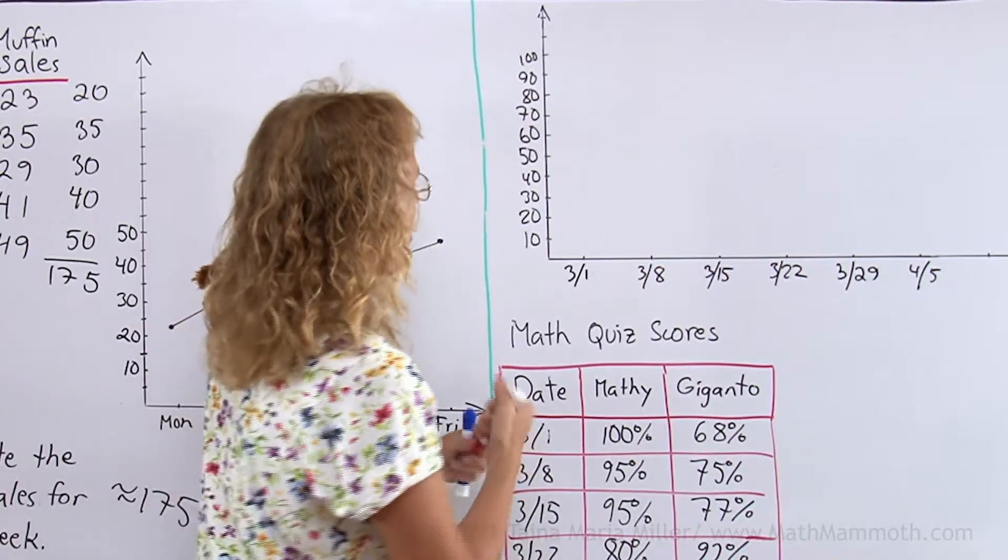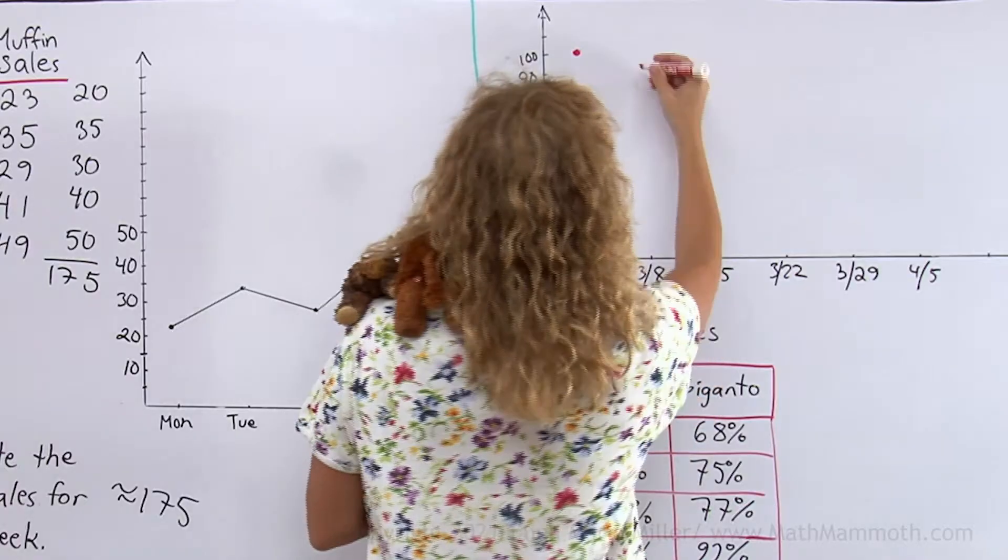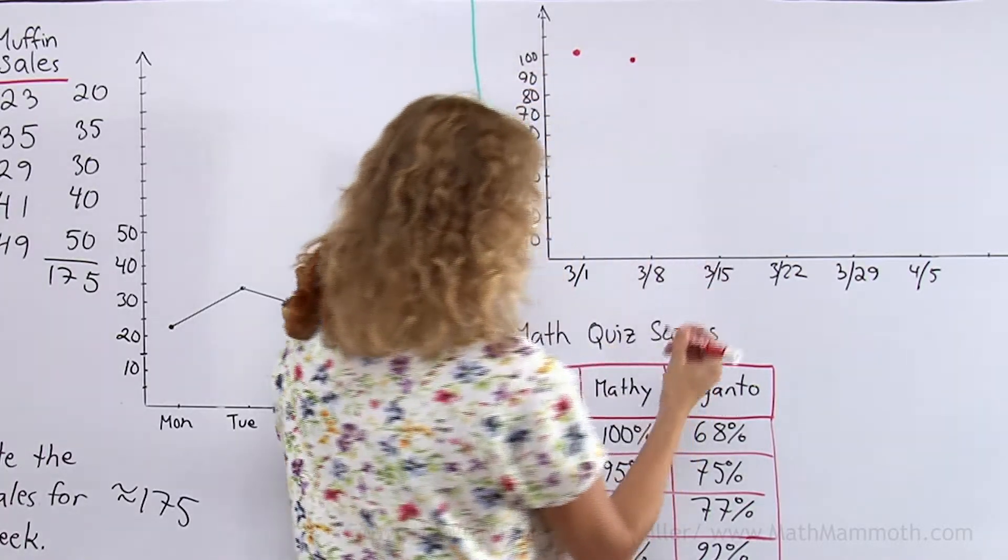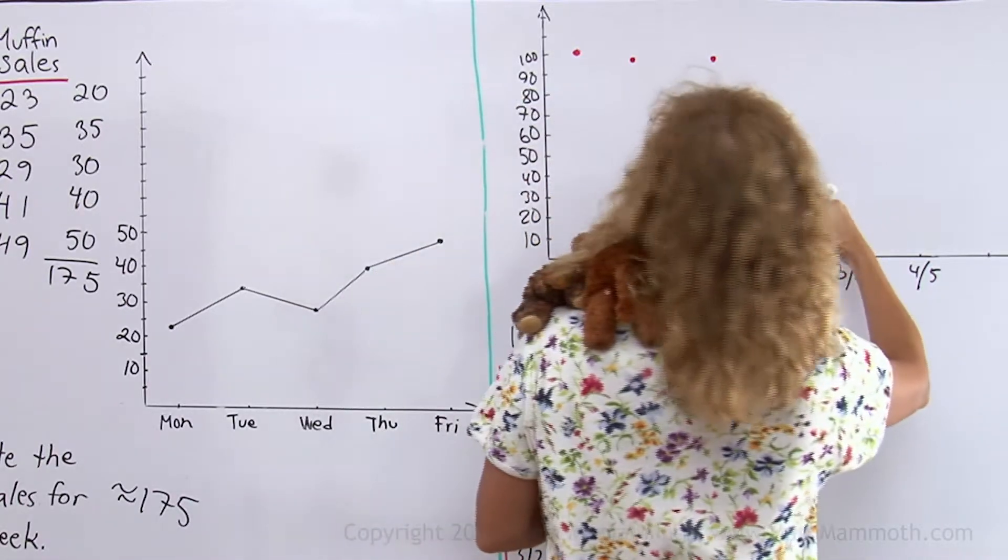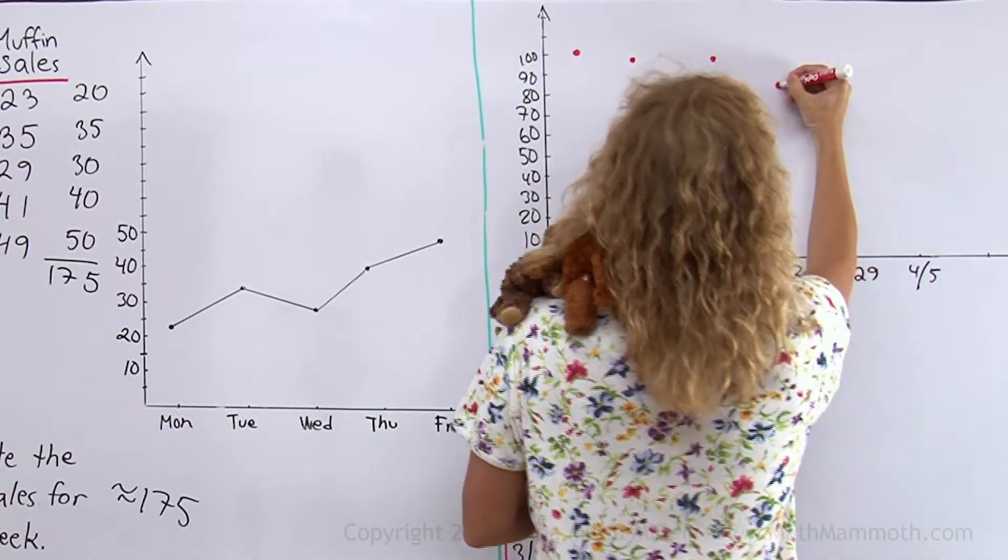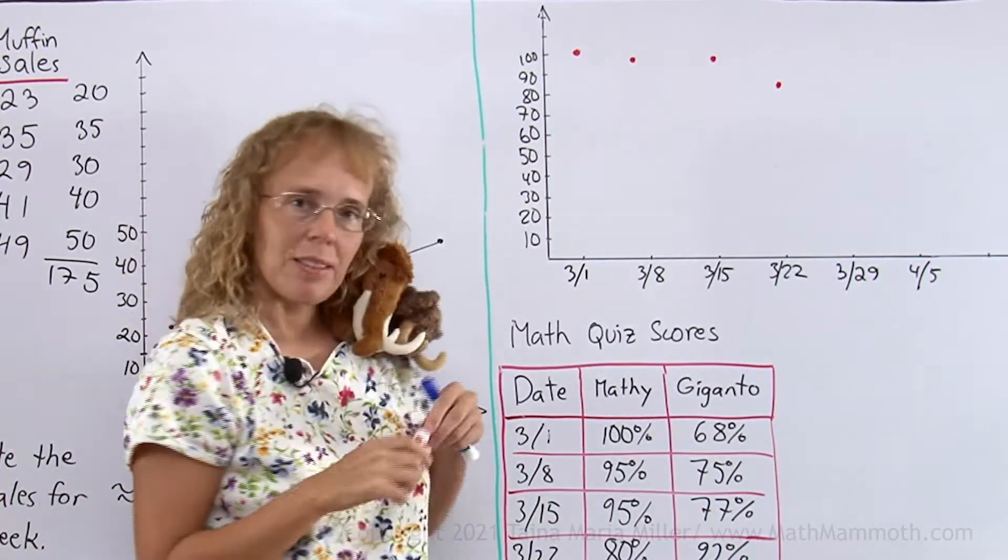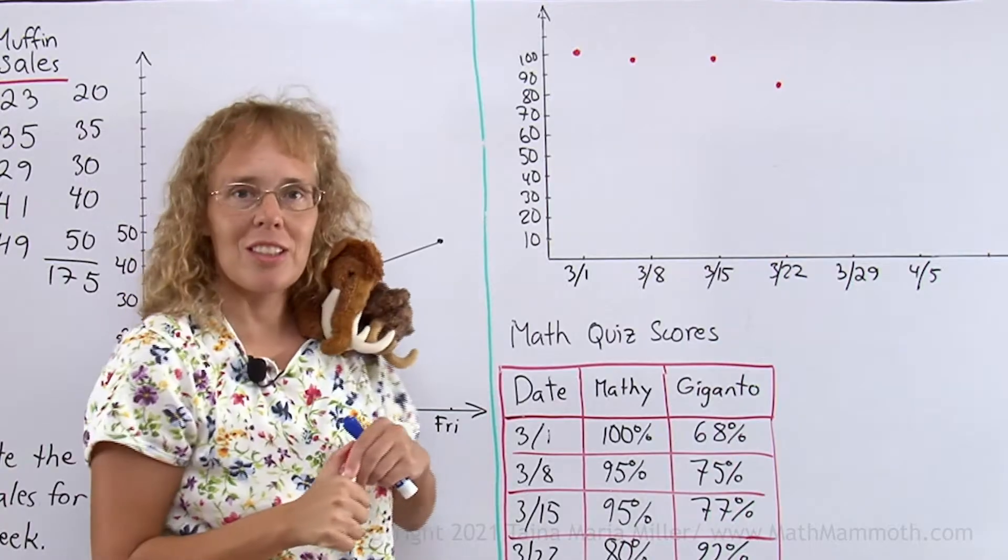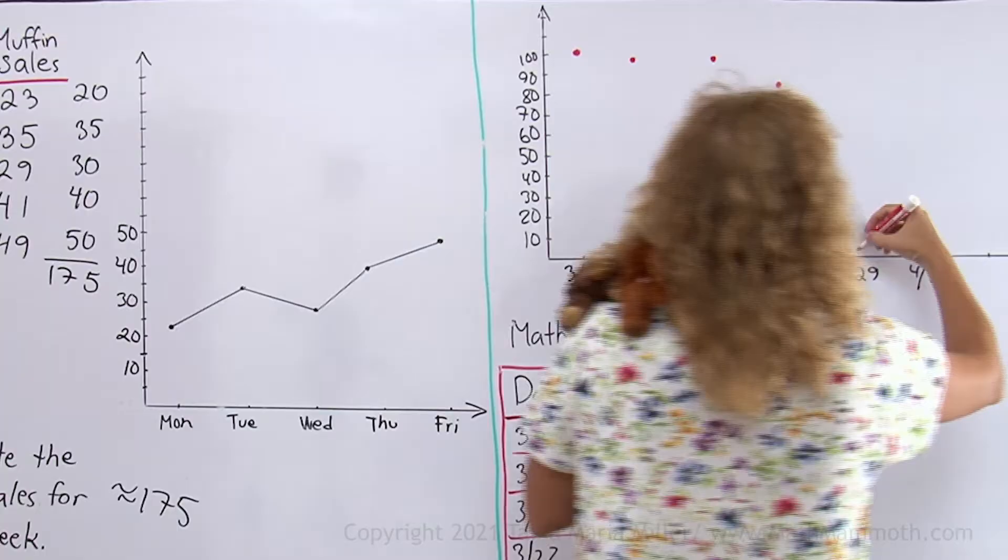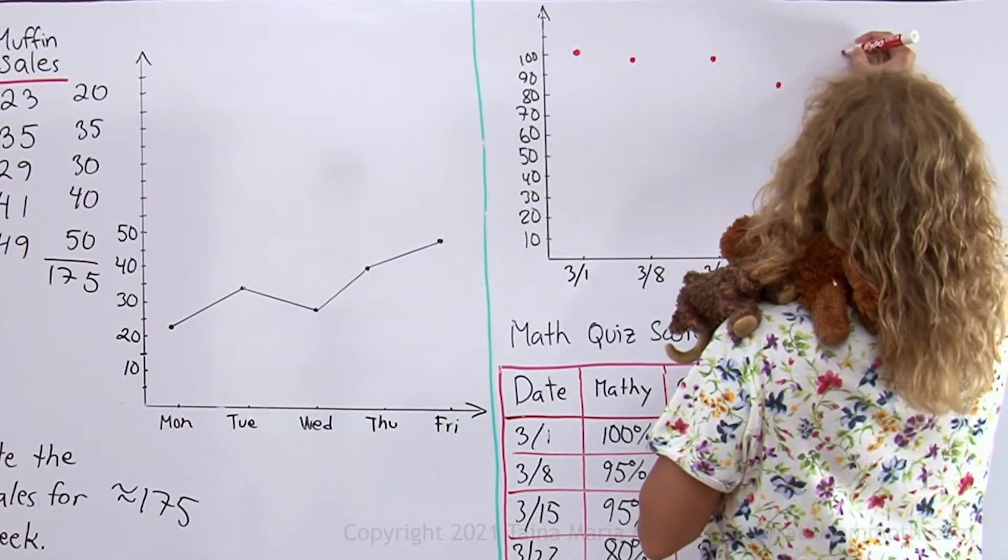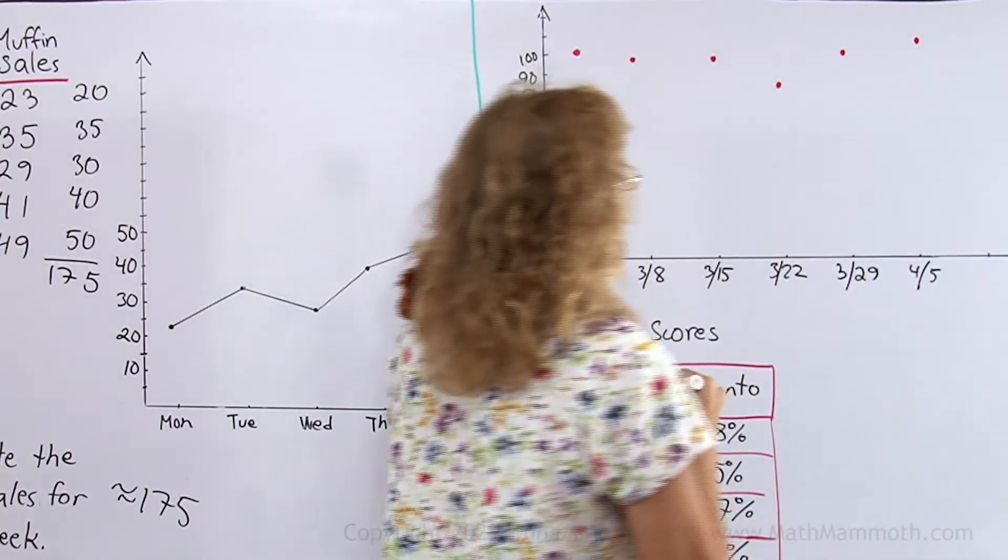Mathie, first test, 100%, over here. Second test, 95%, and then, again, 95%, then 80%. What happened here, Mathie? Did you fall asleep? He said he thought it was such an easy test he didn't study much, and nope, she got 80%. 97%, okay, back to your normal, then the last one is exactly 100%.